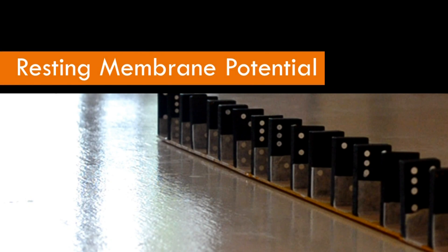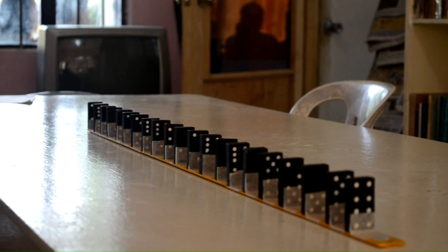The propagation of a nerve impulse down an axon can be modeled by a row of falling dominoes. Resting potential is the state when no impulse travels along the neuron.